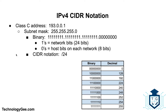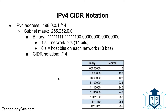Next we have a Class C address: 193.0.0.1. By default its subnet mask is 255.255.255.0. The binary equivalent has 24 bits turned on to represent the network bits, and eight host bits representing addresses assignable to devices. The CIDR notation is slash 24, indicating the first 24 bits have been turned on to represent the network.